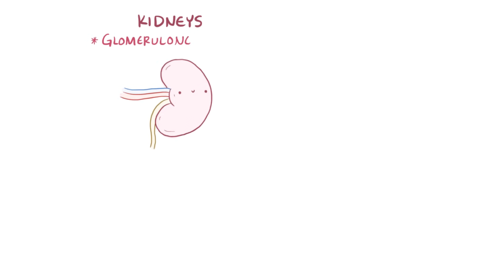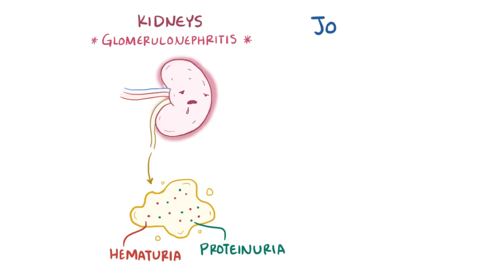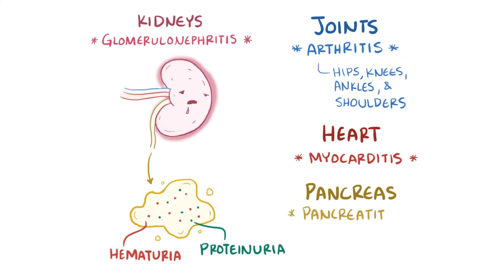Less commonly, mumps can infect the kidneys and cause glomerulonephritis, which eventually leads to hematuria and proteinuria — blood and protein in the urine. It can also affect the joints, causing arthritis, usually in the large joints like the hips, the knees, the ankles, and the shoulders. And it can affect the heart, causing myocarditis, as well as the pancreas, causing pancreatitis.